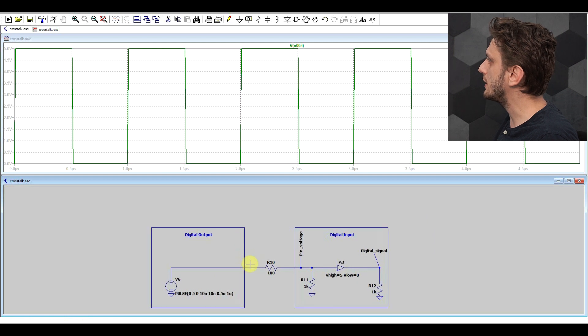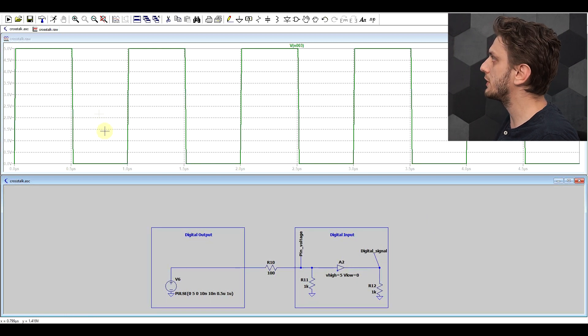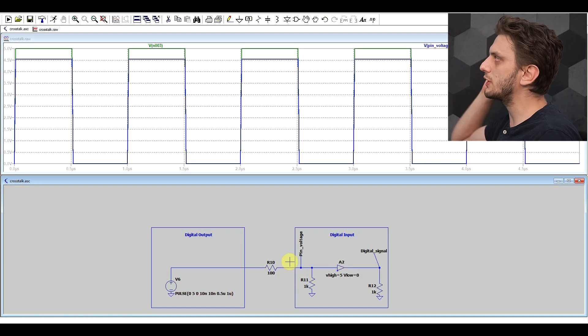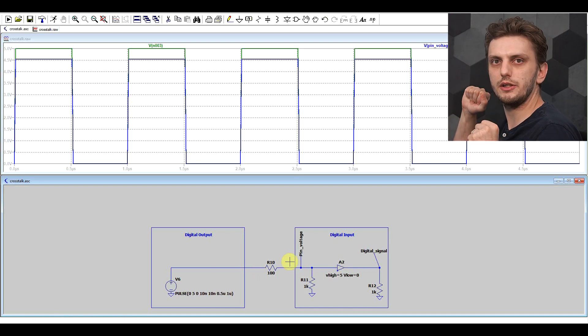And if we look at this, we see that our output looks perfectly clean, nice square wave, so does the input. There's a bit of a voltage drop because of the resistors I've used, but that doesn't really matter. We have our clear high threshold and our clear low threshold.